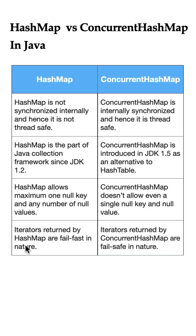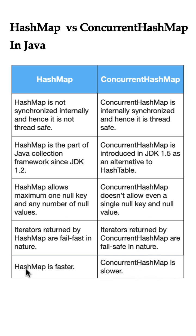ConcurrentHashMap does not allow even a single null key or null values. The iterators in HashMap are fail-fast, which means if we try to change the HashMap during iteration, it will throw a ConcurrentModificationException. Whereas the iterators in ConcurrentHashMap are fail-safe — if we try to change the ConcurrentHashMap while iterating, it does not throw a ConcurrentModificationException.